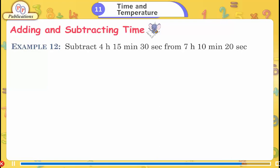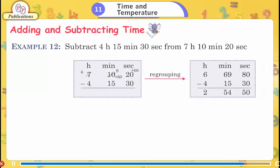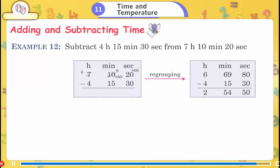Example 12: Subtract 4 hours 15 minutes 30 seconds from 7 hours 10 minutes 20 seconds. Answer: 2 hours 54 minutes 50 seconds.